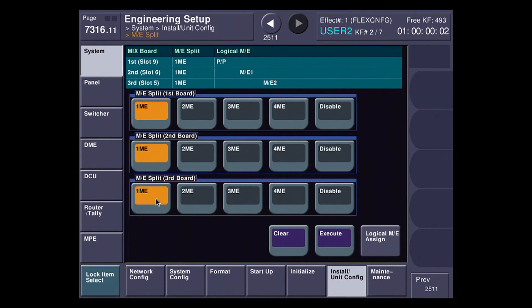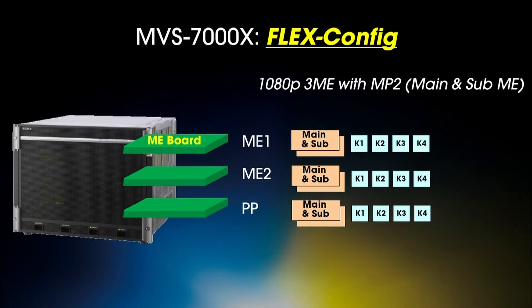If we move to the next mode, this is when we're in 1080p mode. 1080p mode is three-gigabit mode — that could be 1080 60p, 50p, or 3D over a single wire. In that case, you have four keyers per ME, and you can have three MEs in the switcher. You still have main and sub for Multiprogram 2.